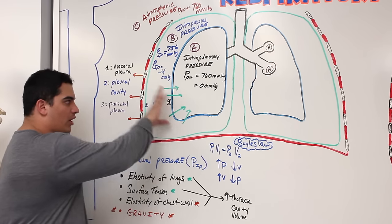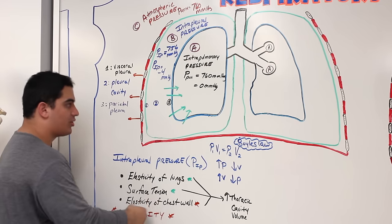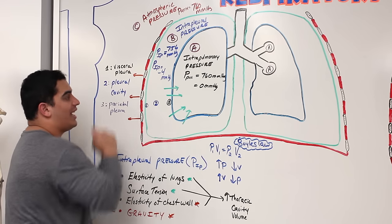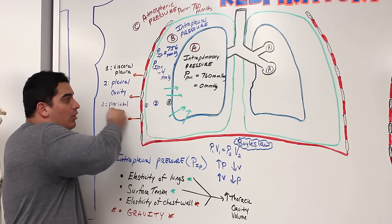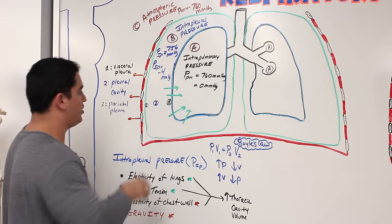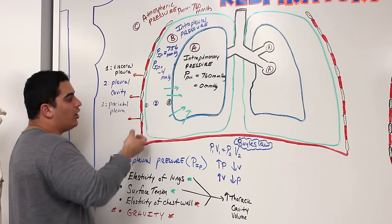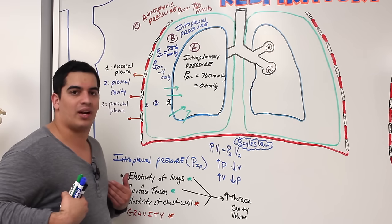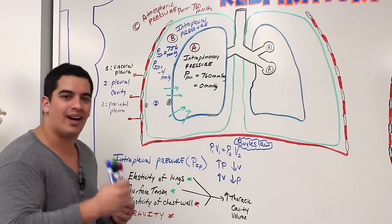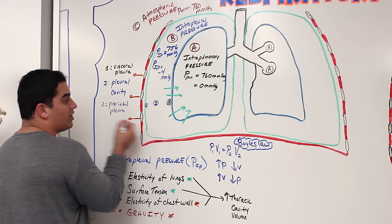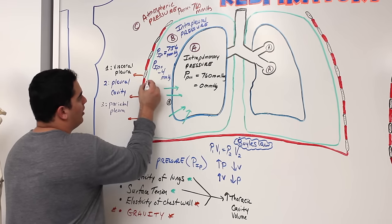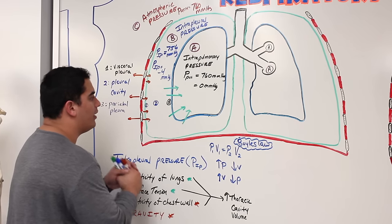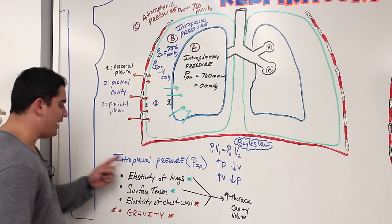To recap: lung elasticity wants the lungs to snap back to their smallest size — pulling the visceral pleura away from the parietal pleura. Surface tension wants to collapse the alveoli. The chest wall, when inspiring, wants to expand outward — pulling the parietal pleura away from the visceral pleura. While the chest wall can also recoil, the net dynamic interplay of all three maintains this negative intrapleural pressure.